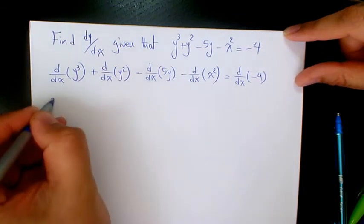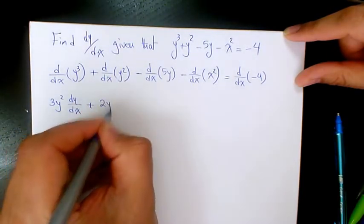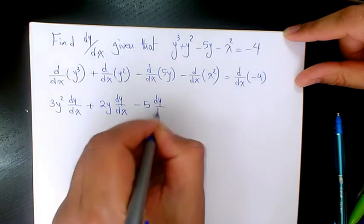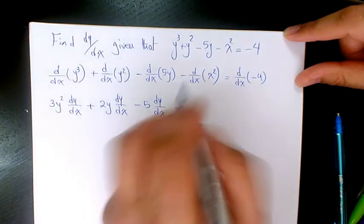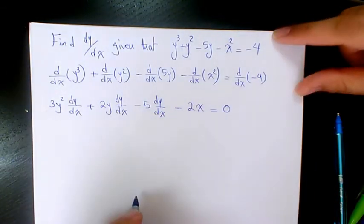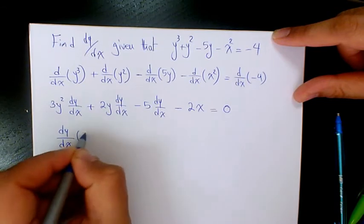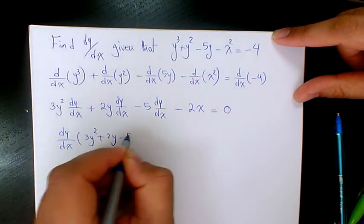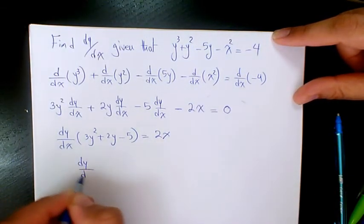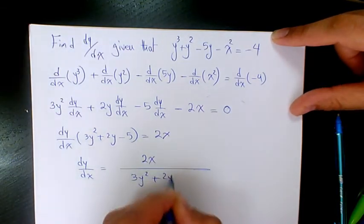This gives 3y² dy/dx + 2y dy/dx - 5 dy/dx - 2x = 0. Factoring out dy/dx: (3y² + 2y - 5) dy/dx = 2x. Moving 2x to the right-hand side gives dy/dx = 2x over (3y² + 2y - 5).